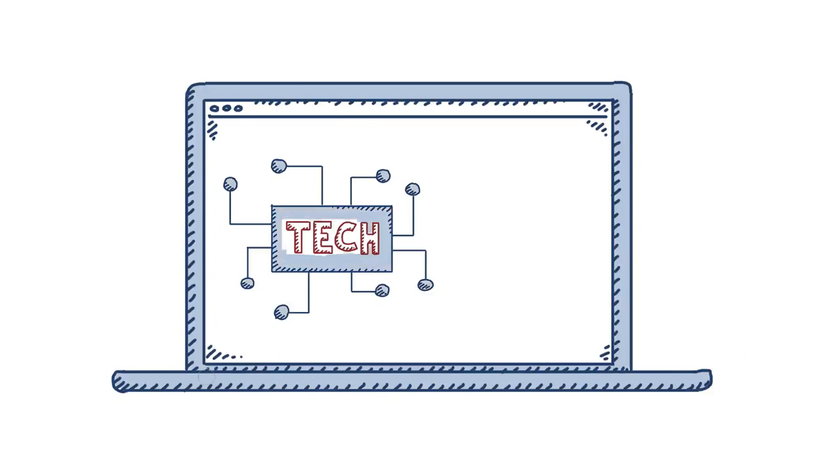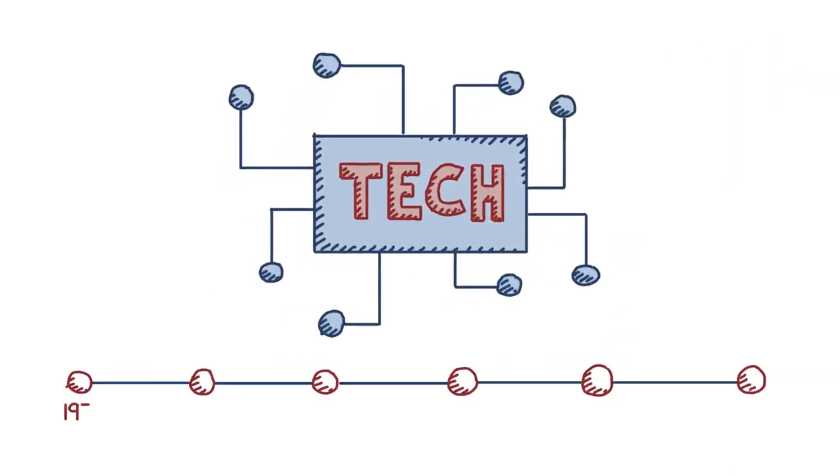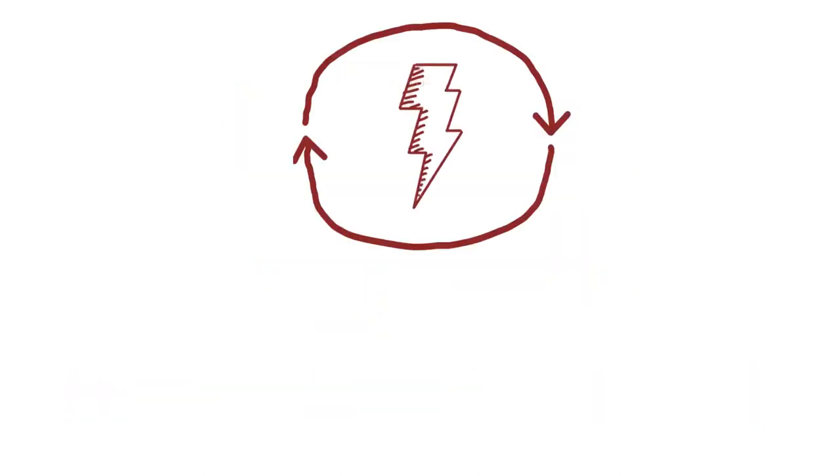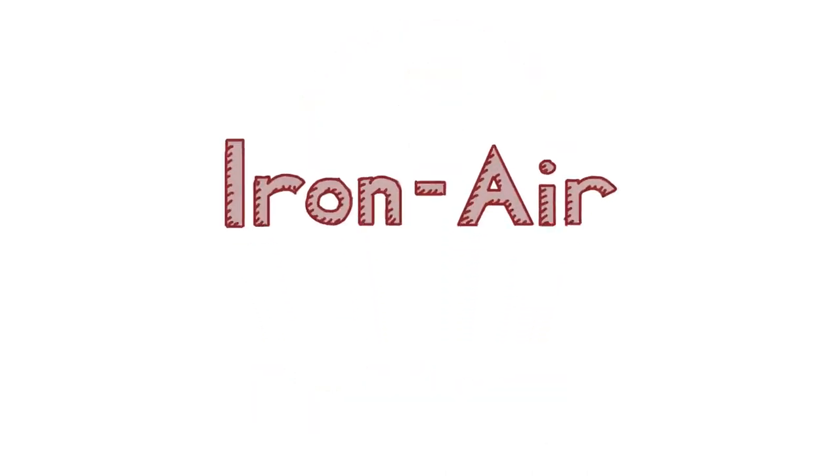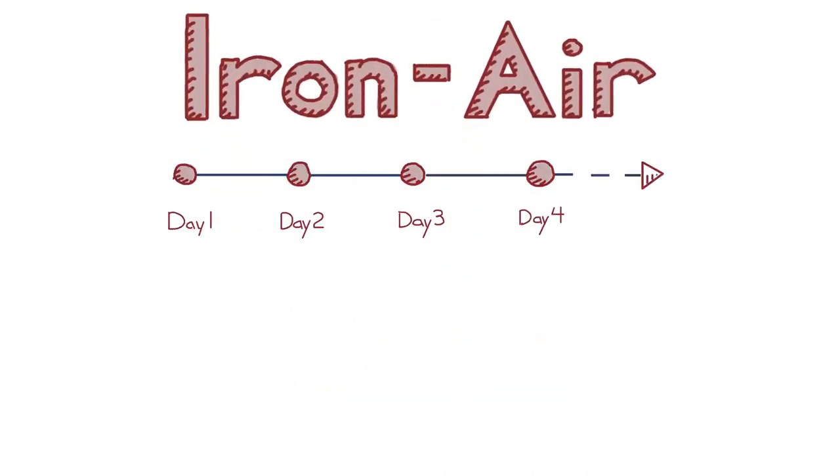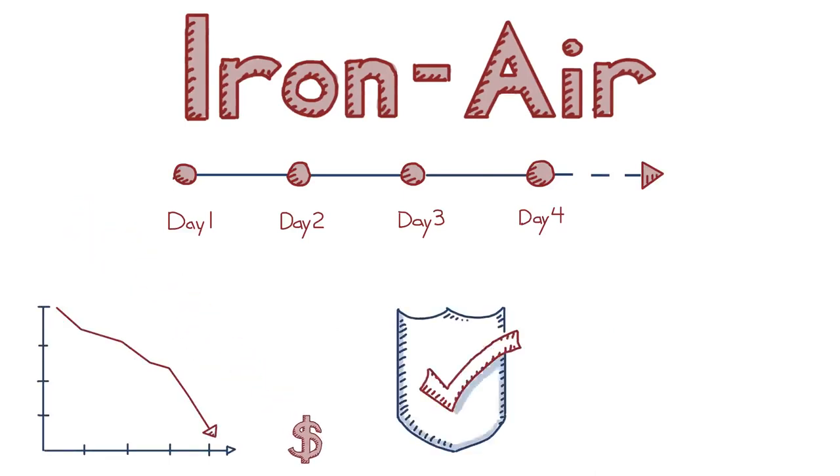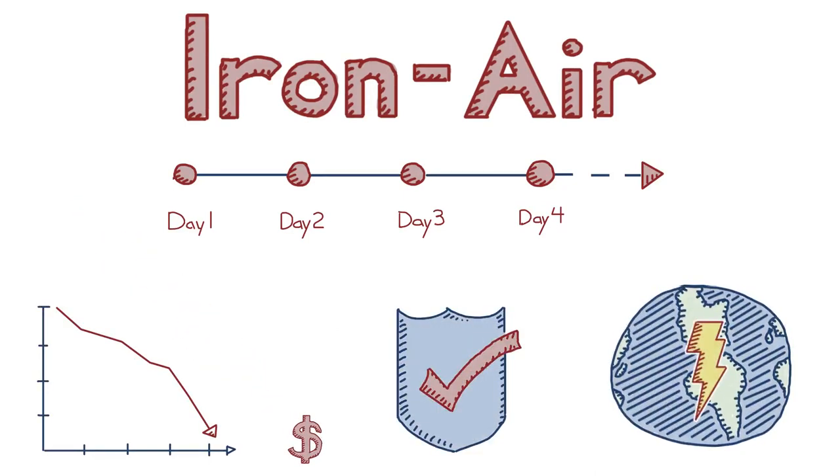Form conducted a broad review of available technologies and selected something truly different from the vast majority of other approaches underway. A technology that's been known for decades but never truly commercialized: a rechargeable Iron Air battery. Form believes Iron Air is the best long-duration grid-scale storage solution due to its extremely low cost, safety, durability, and global scalability.